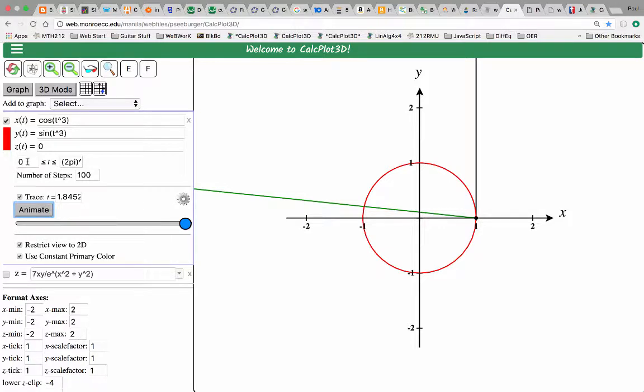We could also go from, say, a negative value here. So negative, why don't we go from pi to the one-third to pi to the one-third. Okay, and then animate that.